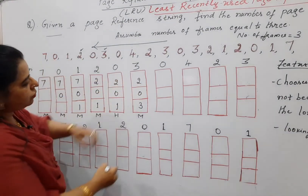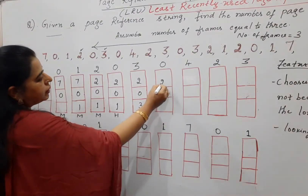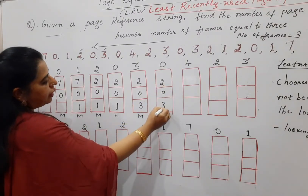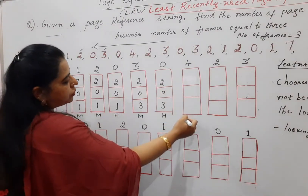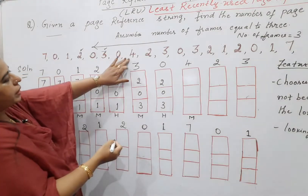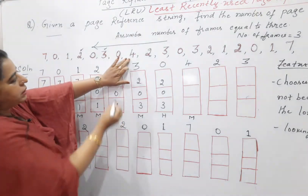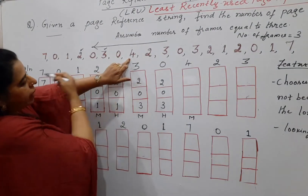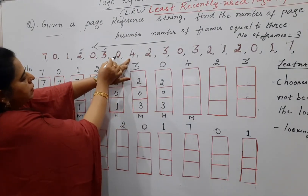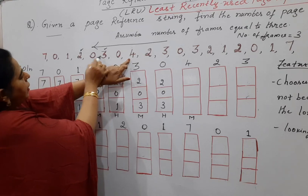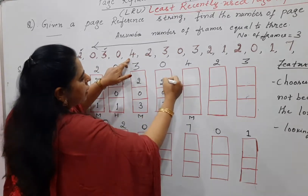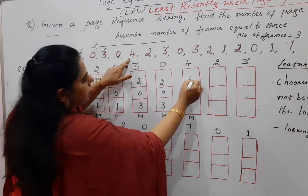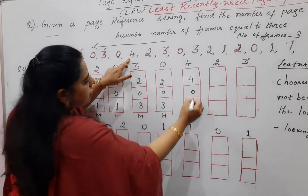Next is zero, which is already there — it is a hit. Four is a miss. Looking backward in the reference string, the frames contain two, zero, and three. Two is the one which was used long ago, so you replace two with four. Frames now hold four, zero, and three.